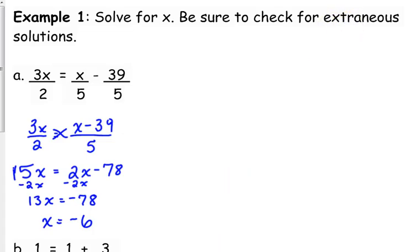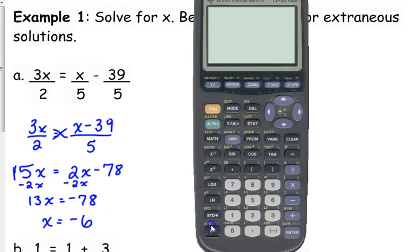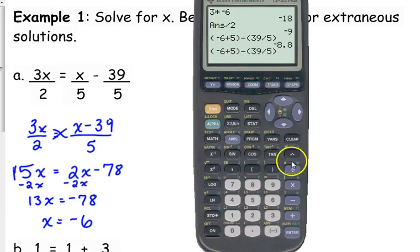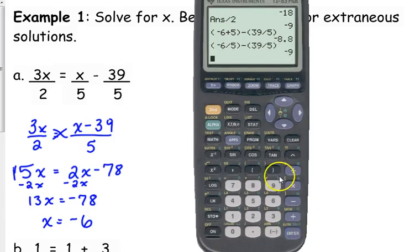We do need to check that. So plug it into the left side. 3 times negative 6 divided by 2, we get negative 9 on the left side. On the right side, make sure you put these expressions in parentheses so that your calculator follows the correct—whoops, I had a plus instead of a divide. There we go, negative 9. Okay, so both sides do equal negative 9.